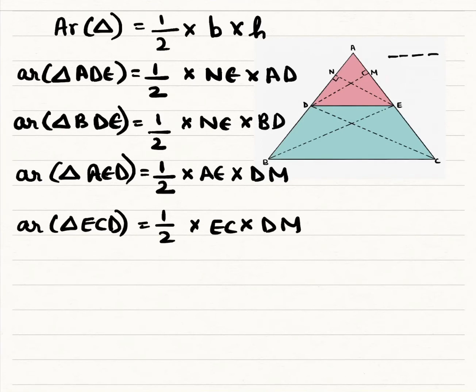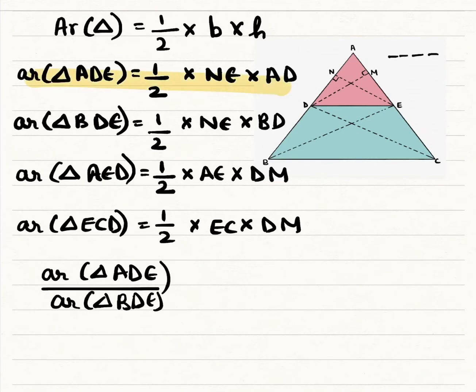So now if we divide area of triangle ADE by area of triangle BDE, that is, we divide these two equations, we get—you can see that in these two equations, if we just put this here and divide them,